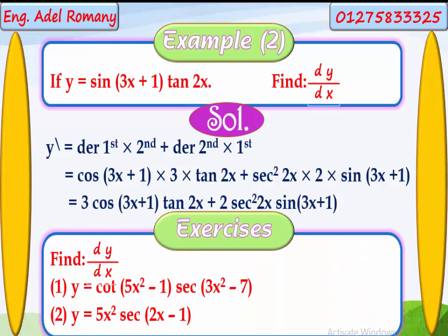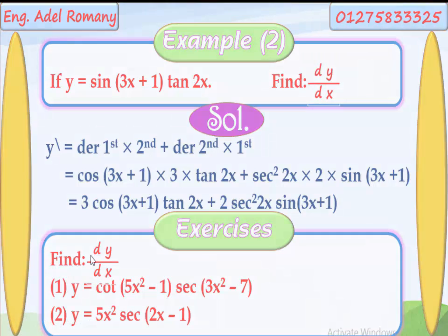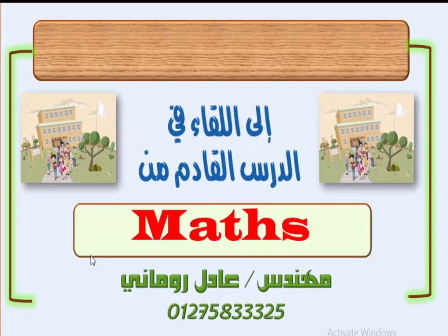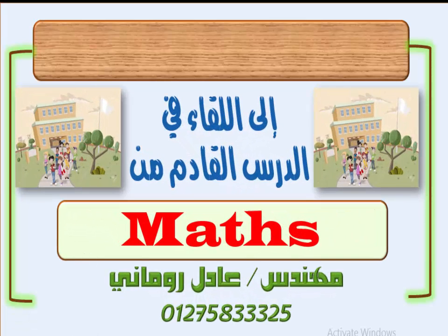These are the exercises. Find dy over dx. Number 1: y equals (5x plus 2) to the power of 6 times (3x plus 2) minus 7. Number 2: y equals (5x plus 2) to the power of 6 times (2x plus 1). This is the first lesson in differentiation. We'll see you in the next video.